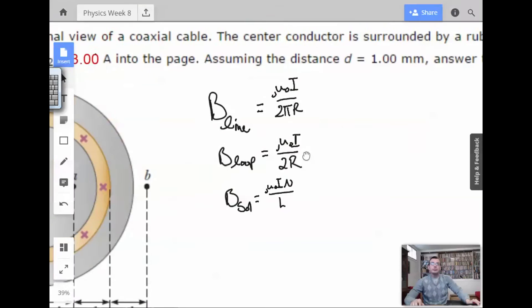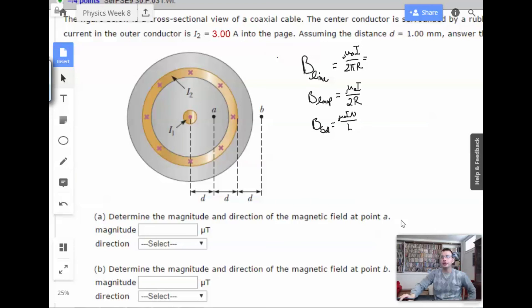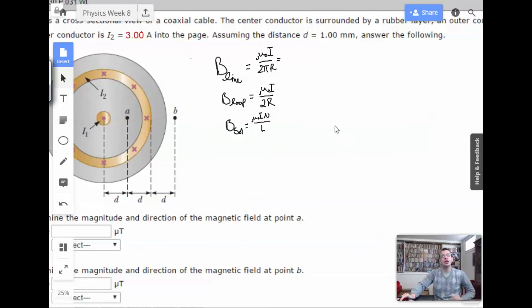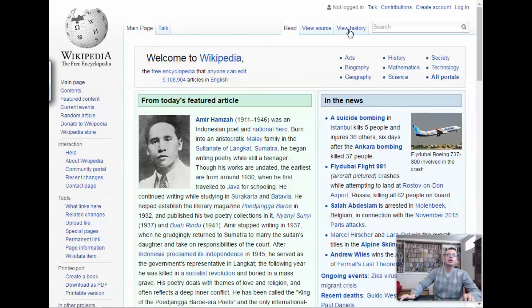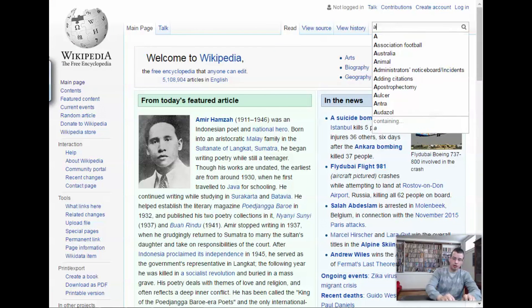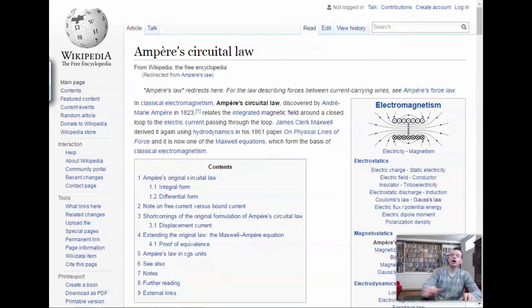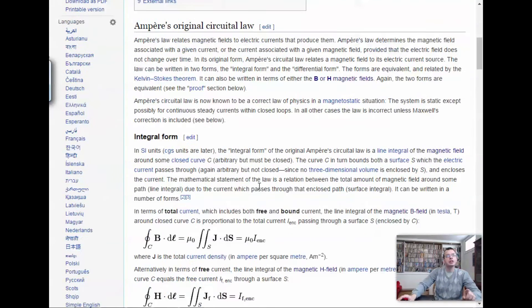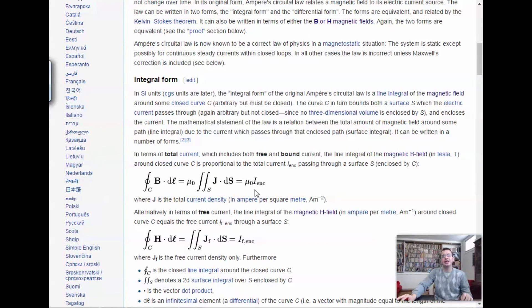So now that we have our three equations, we're going to solve this. We're going to use Ampere's Law, which is basically this equation right there. Integral B dot dl equals μ₀I enclosed.